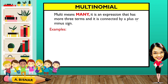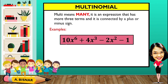Another type is multinomial. Multi means many. It is an expression that has more than 3 terms connected by a plus or minus sign. For example: 10x to the 6th power plus 4x cubed minus 2x squared minus 1. The first term is 10x to the 6th, the second is 4x cubed, the third is 2x squared, and the fourth is 1. Since this has more than 3 terms, it is considered multinomial.